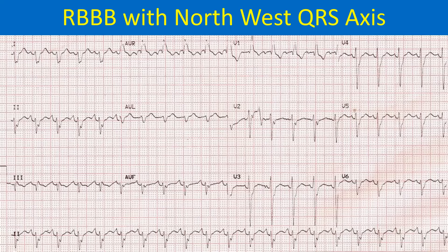RSR' pattern in V1, and RS pattern in leads I, AVL, and V6 are features of right bundle branch block. The amplitude of R waves in the lateral leads is quite low, and QRS width is a little more than 120 ms.